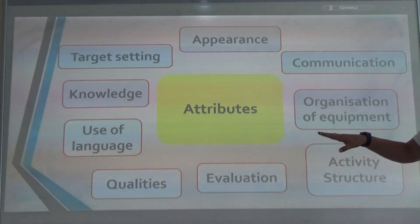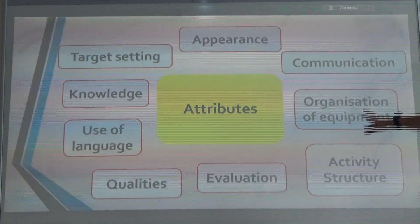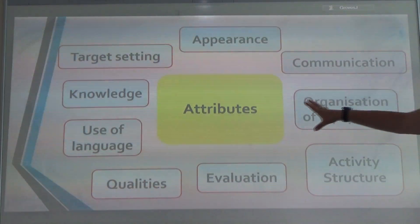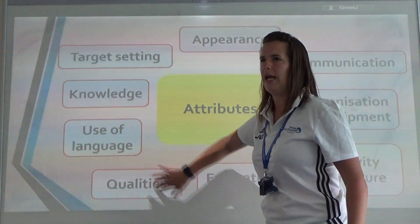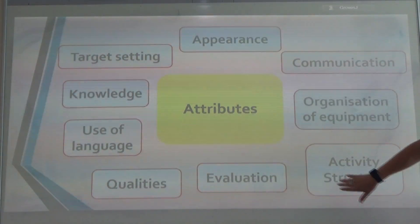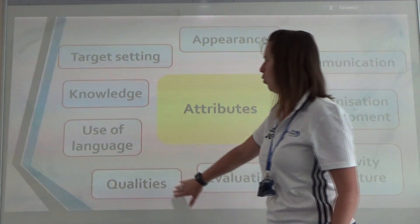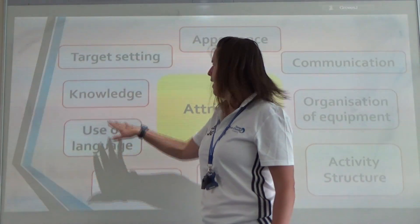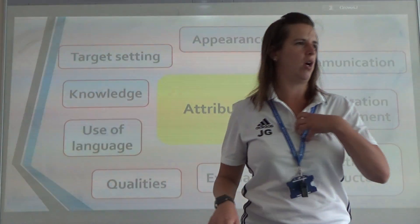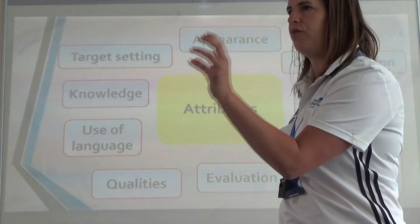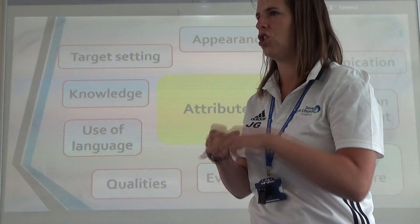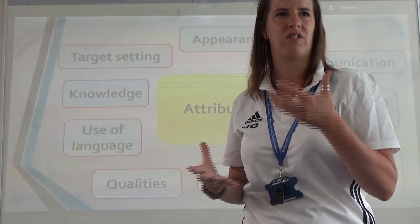The different attributes that a sports leader needs are listed on the board. For your first piece of coursework, you are going to need to explain what each of these are: appearance, communication, organisation of equipment, activity structure, evaluation, qualities, use of language. Just to give you an example - knowledge. As a PE teacher, I need to have lots of knowledge about lots of different sports. It might not be that in-depth, but I need to know the rules, the regulations, how to play the game, what skills they need.